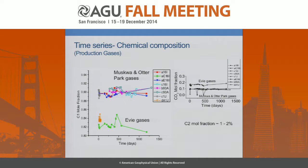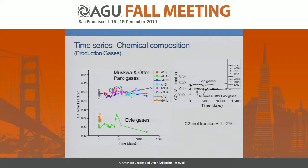Looking at the time series — the three formations, the Muskwa and the Otter Park, have basically the same composition: about 80–90% methane, about 10% CO₂. The Evie has more CO₂. These are samples from the same well sampled over several days or even several months. This is not a log scale. And we can see there are chemical variations with time. To me, it was curious — I thought everything would be uniform once you fracked it and started producing. I was expecting a lot more uniform behavior.